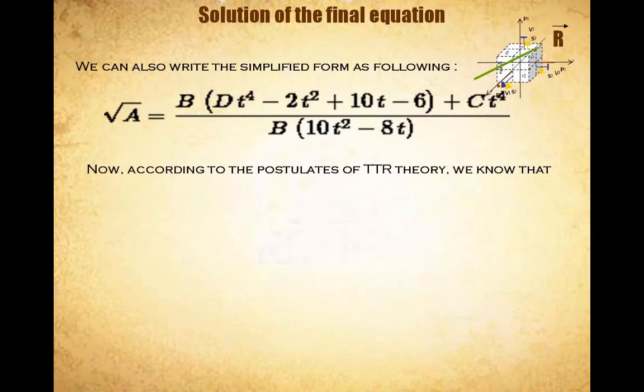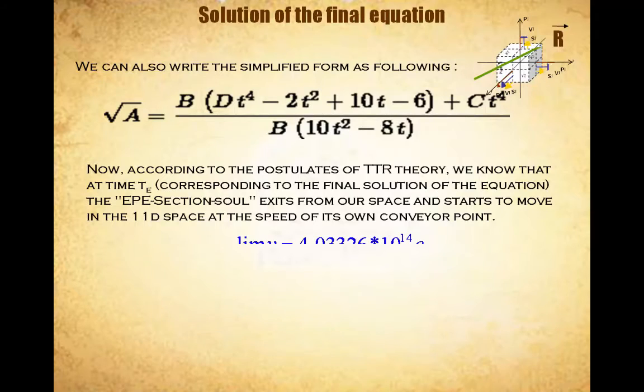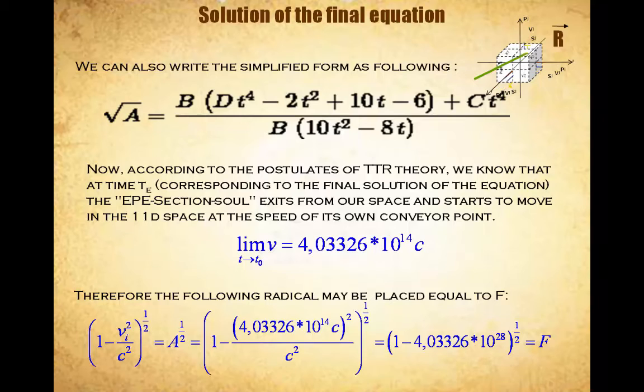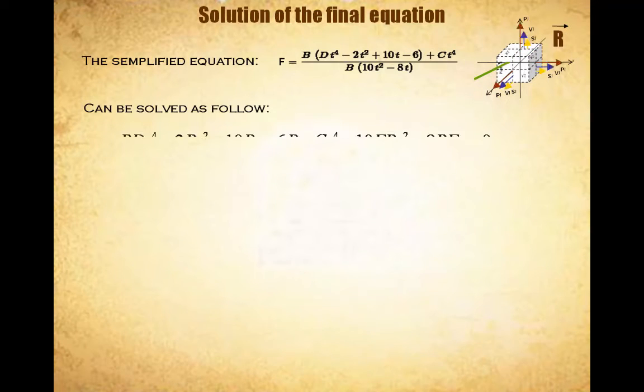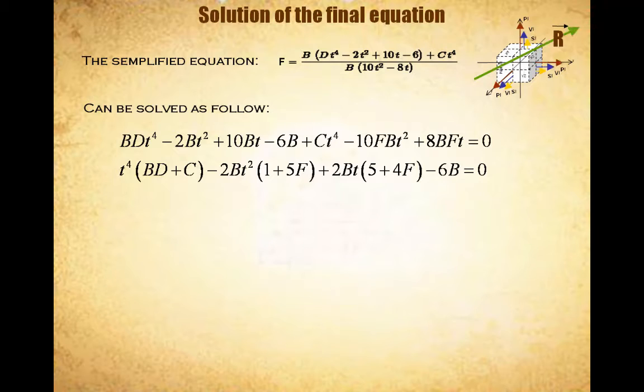Now, according to the postulates of TTR theory, we know that at time t corresponding to the final solution of the equation, the EPI section soul will exit from our space and starts to move in the 11D space at the speed of its own point conveyor. Therefore the following radical may be enhanced and placed equal to F. Now we use the simplified equation with the new variable F that we can rewrite as follows.